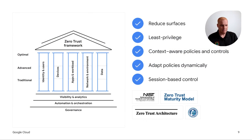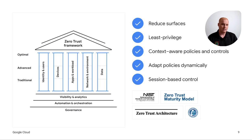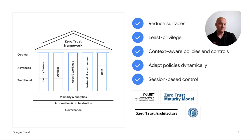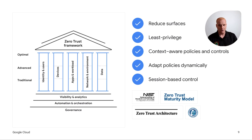We developed our framework based on several industry standards of best practice: NIST SP-800-207 Zero Trust Architecture, the CISA Zero Trust Maturity Model, TIC 3.0, and the Department of Defense Zero Trust framework. The common patterns across these are a set of pillars. We're looking to advance from traditional models to optimal levels of protection for workloads in air gap clouds — reducing attack surfaces, enforcing least privilege, putting in contextually aware policies and controls, adapting dynamically, and ensuring session-based control. We reinforce these pillars with visibility and analytics from Mandiant, automation and orchestration — because machines are faster than humans — and governance, the regulatory framework that defines what we do, why we do it, and how well we do it.